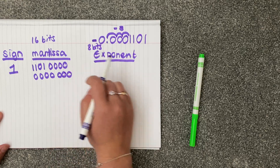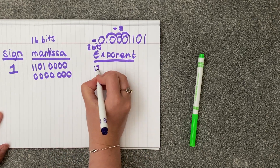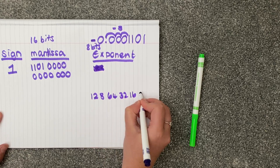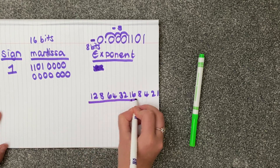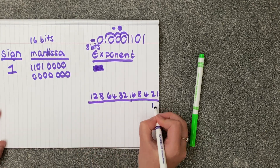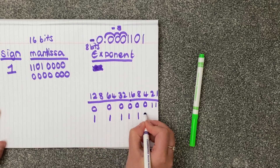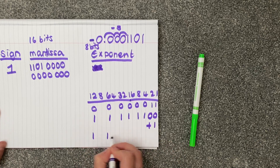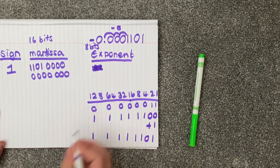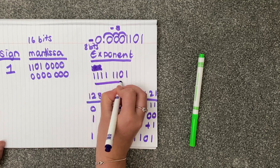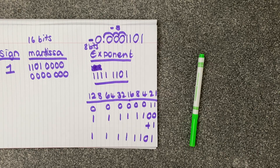We then need to do our exponent, where we work out — right, we've got negative 3. So the first thing I do with using my 8 bits: 128, 64, 32, 16, 8, 4, 2, and 1. We've got to find positive 3 first. For our negative number, we invert all the bits, and we plus 1. So negative 3 is this number in our two's complement binary. That is usually how they would sneak in a two's complement question into an exam, or sometimes it could be an example on its own.